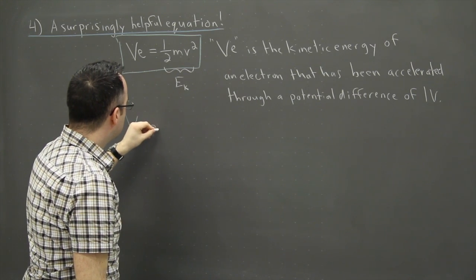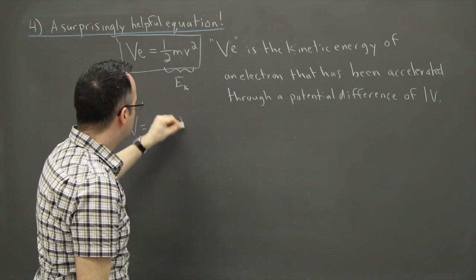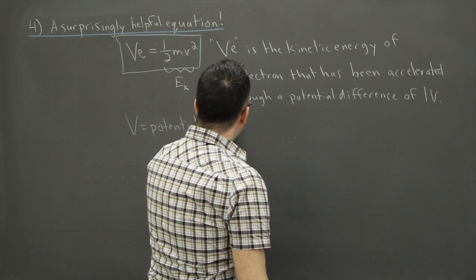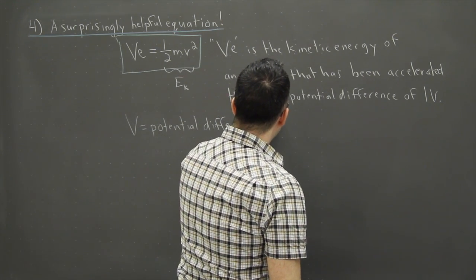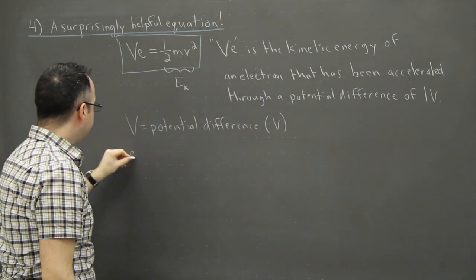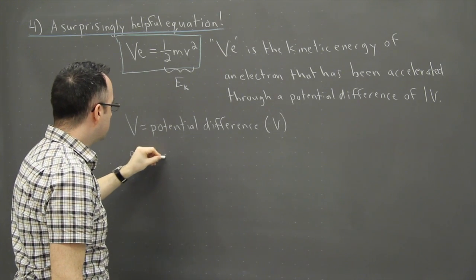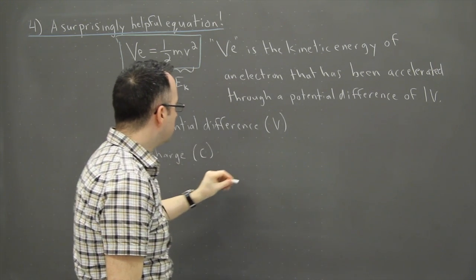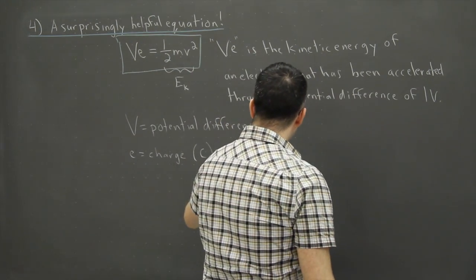So maybe we better just put in what everything is. So V equals the potential difference. In other words, that's the voltage. So it's measured in volts. E is just the charge of the particle. So in this case, it's measured in coulombs. If you want the charge of an electron,